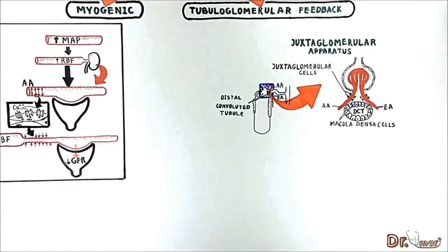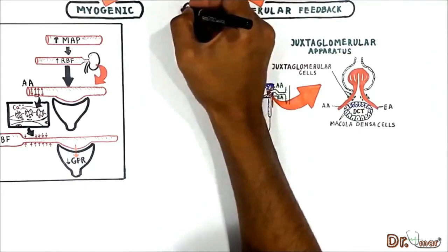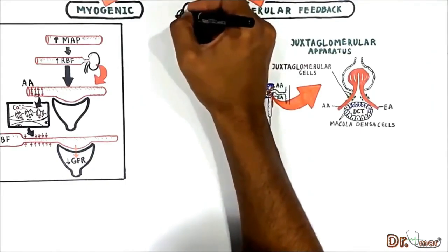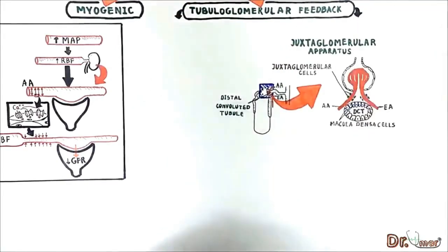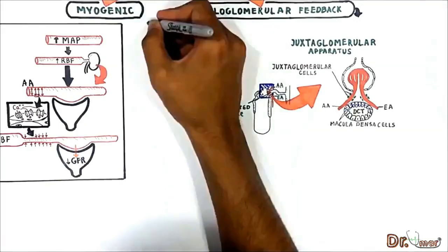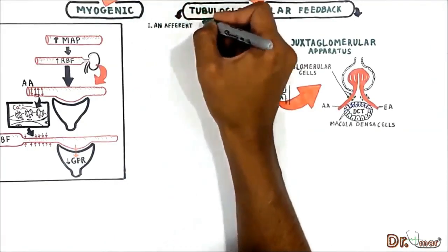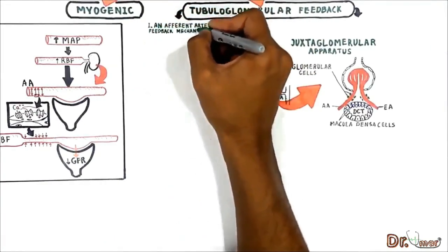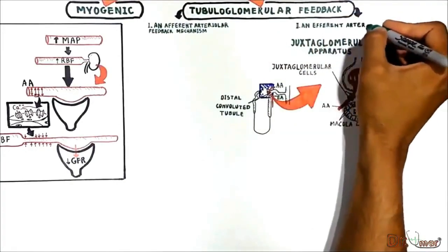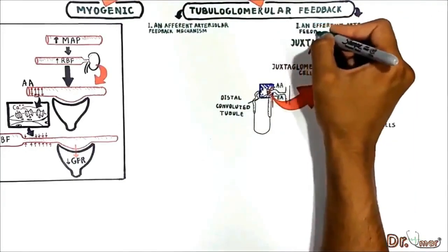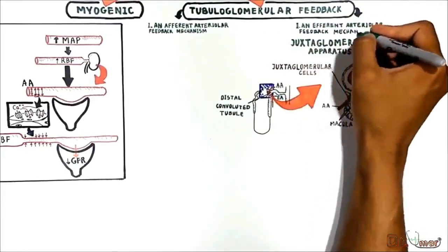The tubuloglomerular mechanism has two components that act together to control GFR: first, an afferent arteriolar feedback mechanism, and second, an efferent arteriolar feedback mechanism.